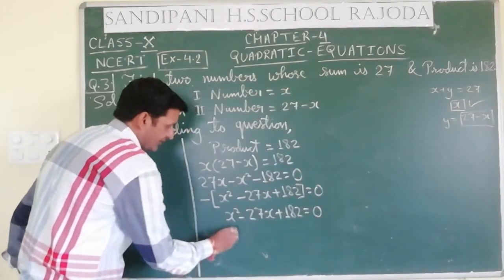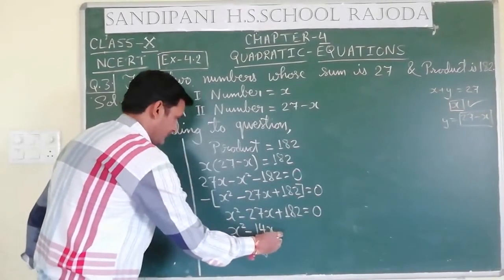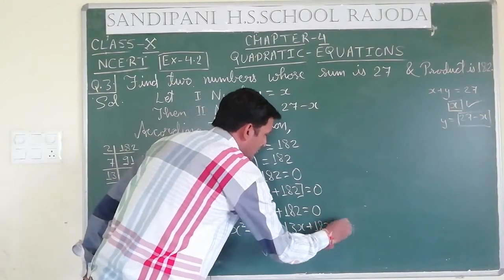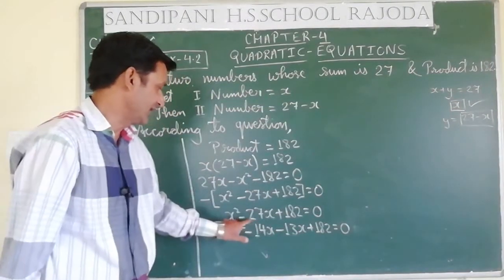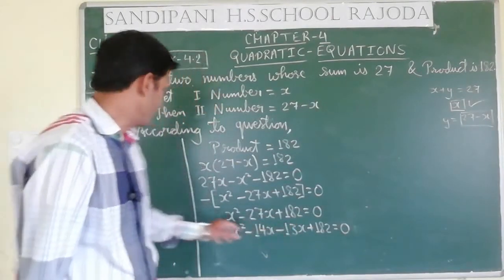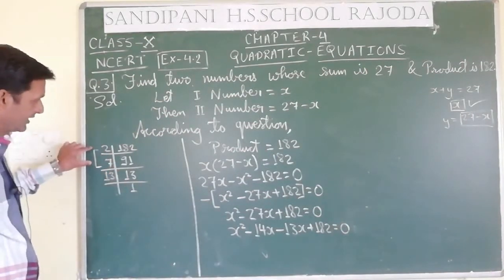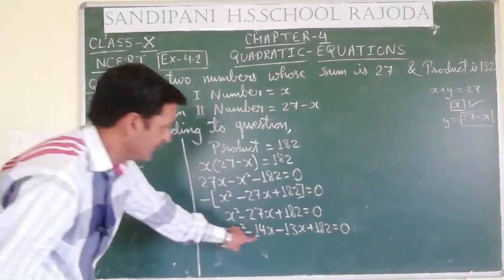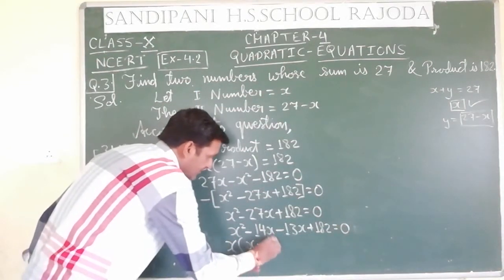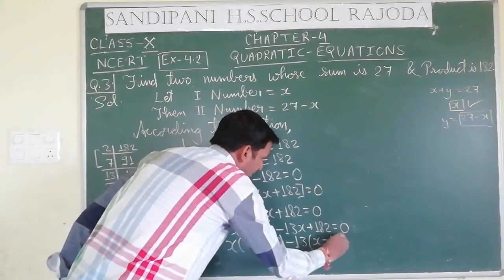Since 14 plus 13 equals 27, we write: x² minus 14x minus 13x plus 182 equals 0. Note that minus 14 plus minus 13 is minus 27, and minus 14 multiplied by minus 13 is 182. So 13 and 14 are the factors, and 13 into 14 is 182.